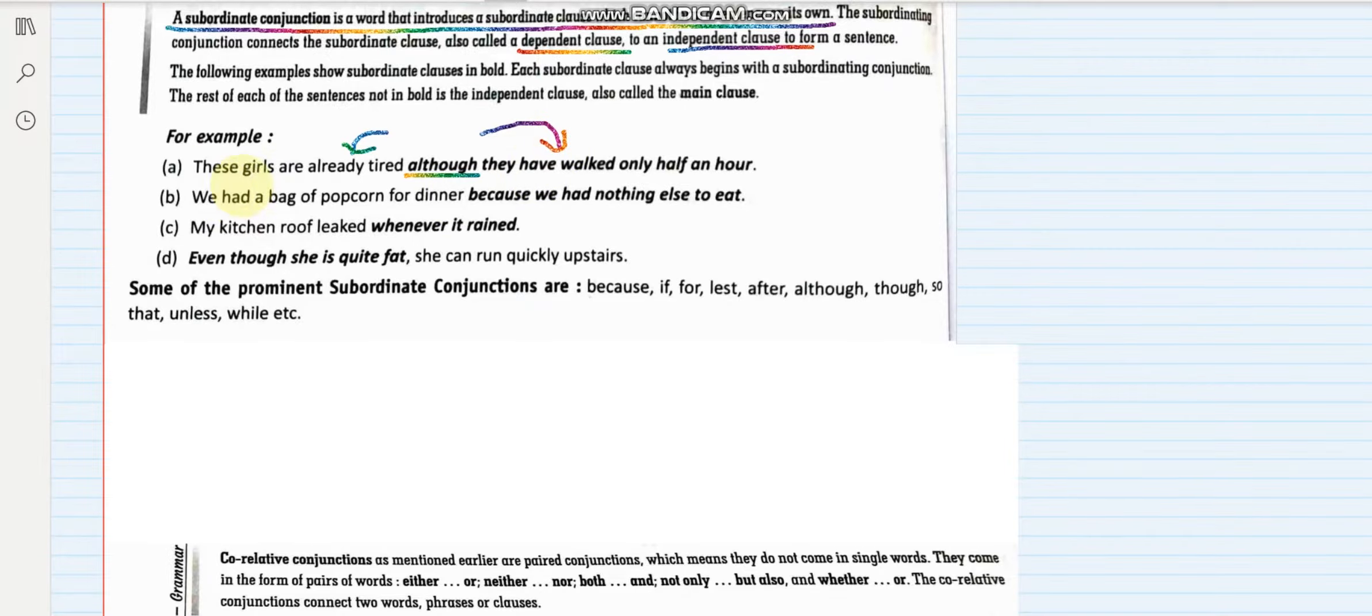Now these two parts form dependent and independent clauses. The dependent clause is the one which cannot form a sentence on its own. Like suppose if I remove this first part, 'These girls are already tired,' will the remaining sentence make any sense?